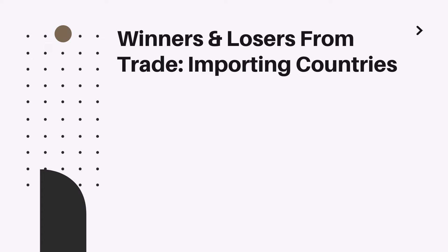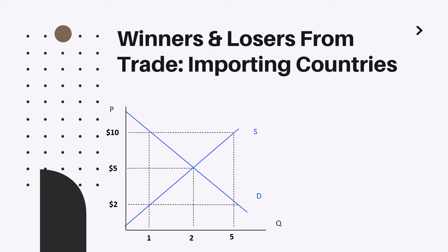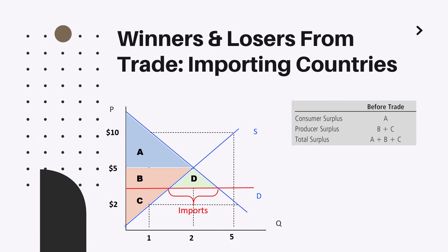Now let us discuss the second scenario of an importing country. Again, we have our market in equilibrium with consumer and producer surpluses. All of a sudden, the country engages in international trade and discovers that the world price is actually lower than the local price, and the country decides to engage in importing activities. Let us firstly calculate the situation before trade, then after trade, and compare the two. Before trade, consumer surplus was represented by section A only. Producer surplus consisted of B and C. And the total surplus was the sum of these two.